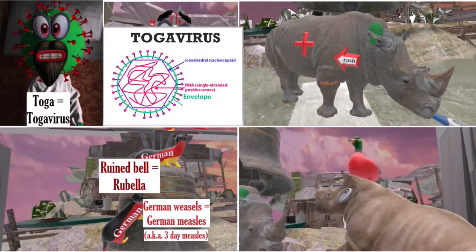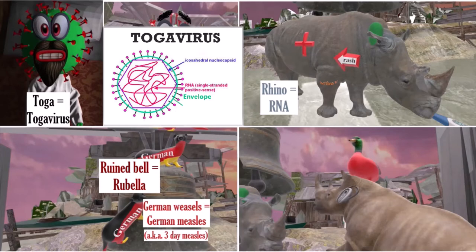RNA is represented by the rhinos in the scene. Rhinos show up in our microbiology videos on RNA viruses — rhino for RNA. And on this rhino on top, we notice the positive sign; perhaps he is a paramedic. This positive sign reminds us of positive sense — that they are positive sense linear RNA viruses.